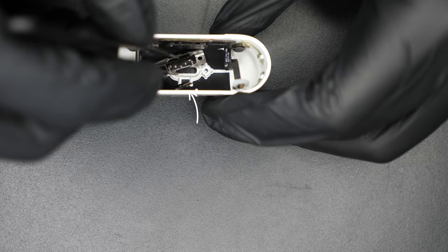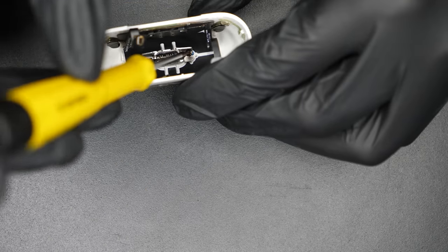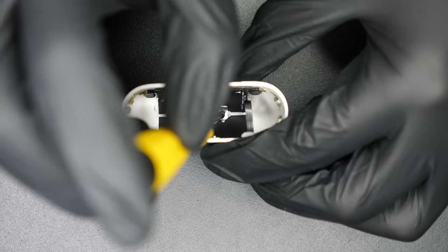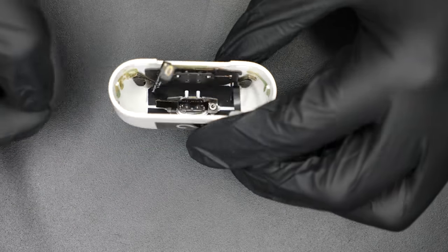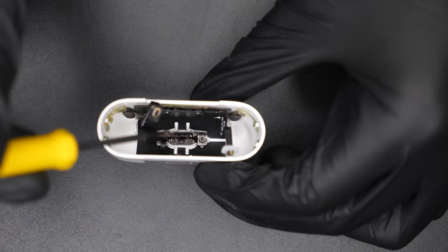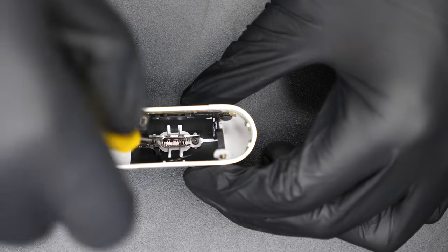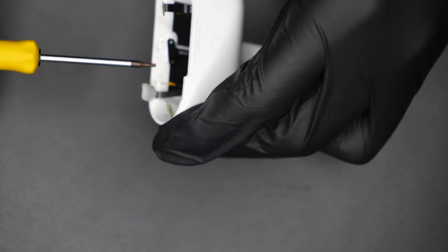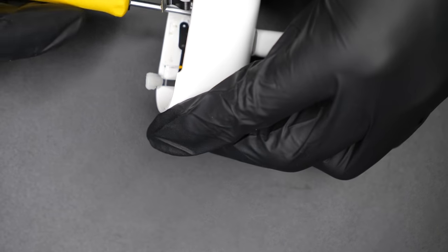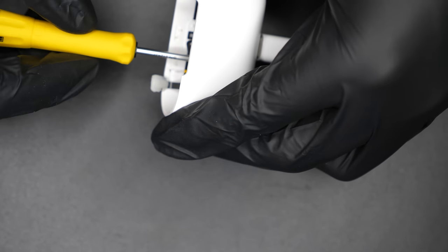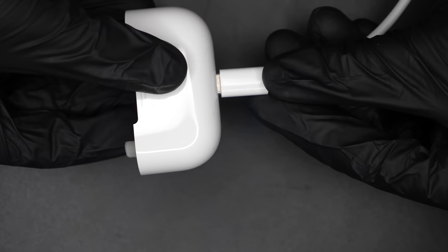You can place the two T4 screws back and start to screw them in but don't go all the way. This is where the optional magnetizer comes in handy. It makes it much easier to place the screws. Now we connect a USB-C cable and then we tighten the screws. This is to make sure that everything is lined up properly. Disconnect the USB-C cable.